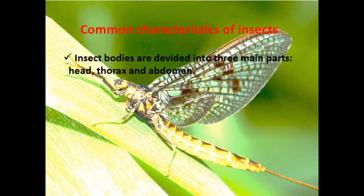First, the body of insects is divided into three main parts. This is the unique aspect of insects. The three main parts are: head, thorax, and abdomen. Head is kepala, thorax is the chest area, and abdomen is the stomach area. Insects also have a pair of feelers on their head — antena. That is another special feature of insects: they have a pair of antennae on their head.